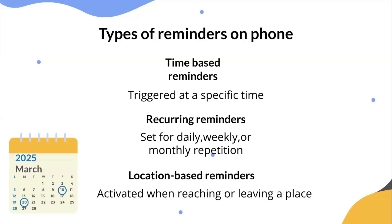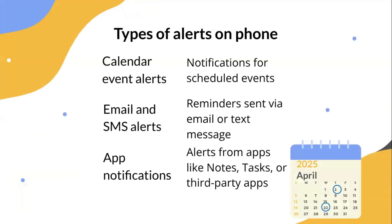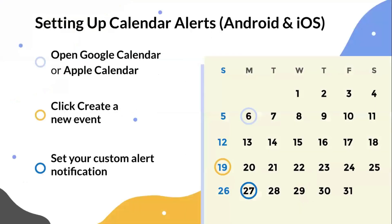There are also location-based reminders, which get activated when reaching or leaving a place. Types of alerts on your phone include: calendar event alerts, which are notifications for scheduled events; email and SMS alerts, which are reminders sent via email or text message; and app notifications, which are alerts from apps like notes, tasks, or third-party apps.